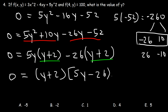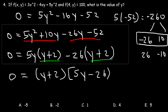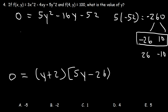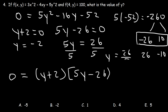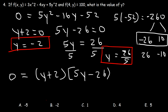Now that we have it in factored form, set both factors equal to 0: y plus 2 equals 0, and 5y minus 26 equals 0. Subtracting 2 from both sides gives y equals negative 2. For the other equation, add 26 to both sides and divide by 5, giving y equals 26 over 5. So these are the two possible values for y. However, only one answer is listed, so answer choice b is the right answer.